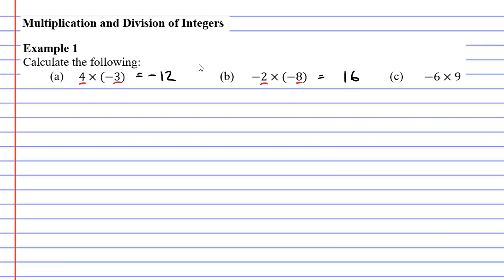And finally moving on to question C now. Focusing first on the numbers without the negative, what is 6 times 9? 54. And then looking back, we only had one negative in the question, so our solution also needs a negative. And that concludes our video on example 1.